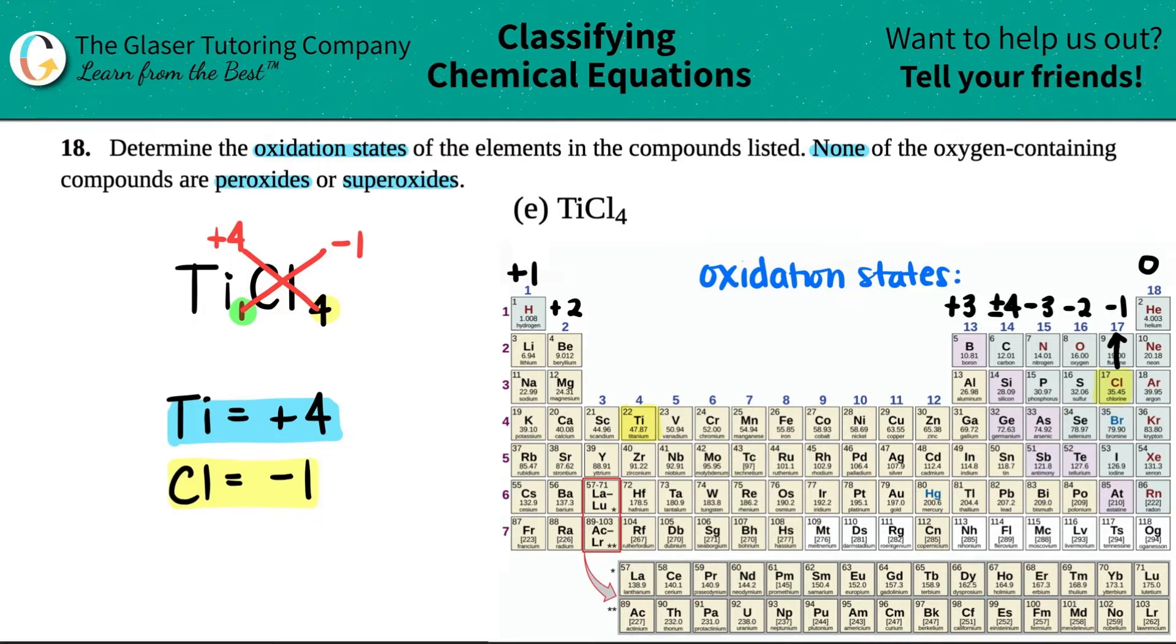So titanium was a plus four. That means that it lost four electrons. The plus always represents losing. And the negative one for the chlorine tells me that that chlorine, all four of them, each one of them gained one electron. And I just say E negative four electrons. And that's it. That's your answer.